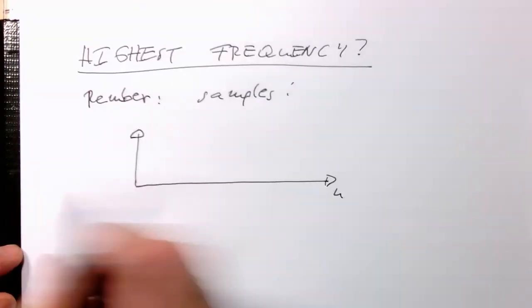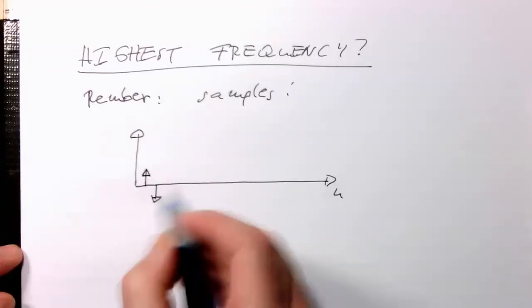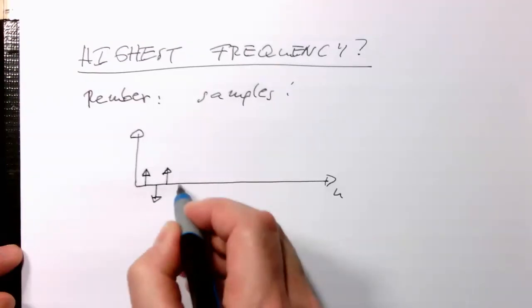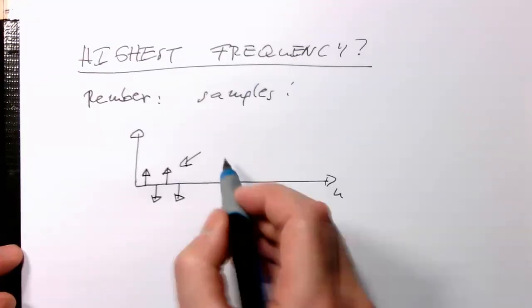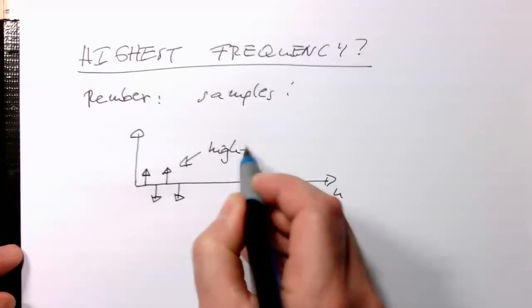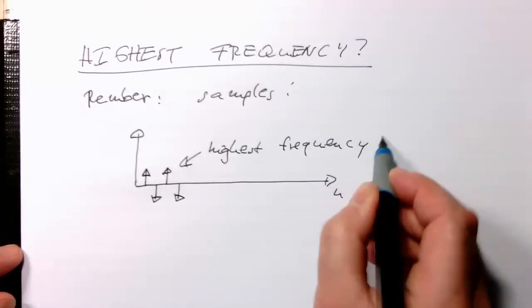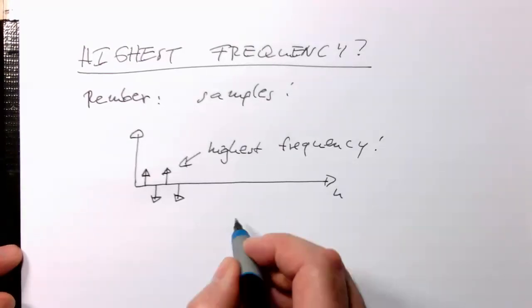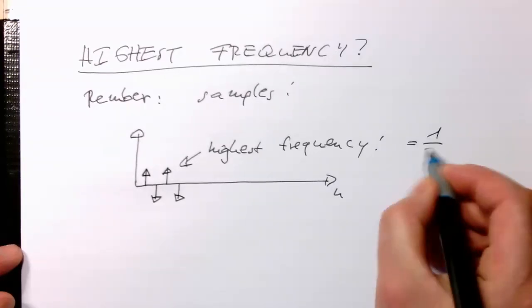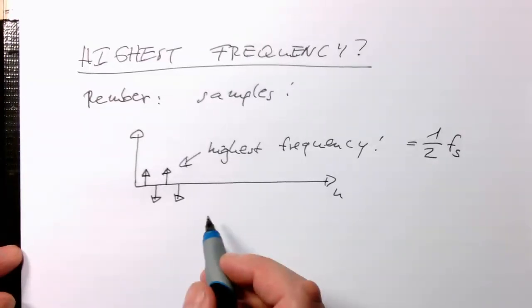That's n. The highest frequency we can encode, we just need to have at least one peak and one valley, and then we alternate that. So the highest frequency is obviously half fs. That's our sampling rate of our OFDM system.